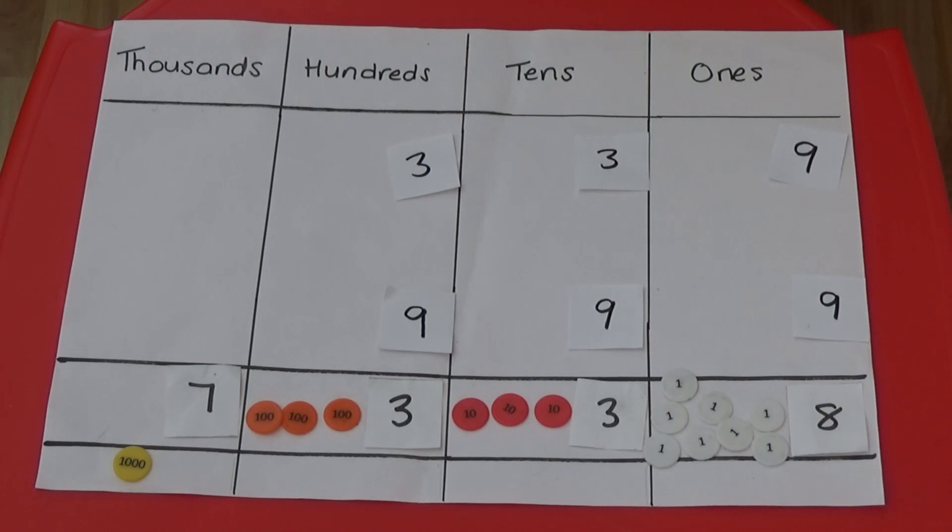Finally, my 1000s need to add up to 7. 3 1000s and 3 1000s as the 1000 underneath equals 7000. So our final 2 digits are 3 and 3.